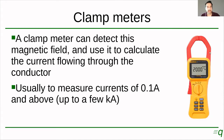A disadvantage is that these things are not very sensitive, so they are usually used to measure very high currents. They can usually measure currents from 0.1 amp or 100 milliamps and above up to a few kiloamps. So this is for big electrical installations really. In electronics their use is limited because of their low sensitivity, but just be aware that these things exist.